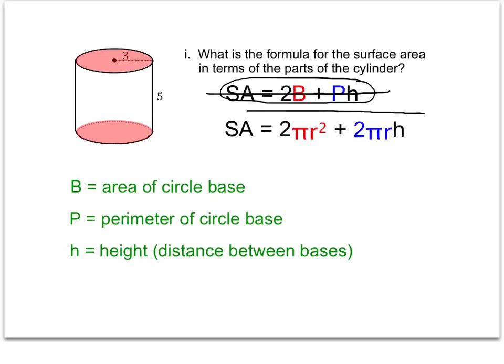So when using the surface area of a cylinder, you'll have pi in the formula because of the circular bases. We took the prism surface area formula and tweaked it to work for circular bases. The formula for the surface area of a cylinder is 2πr² + 2πrh. The only values needed are the radius and the height of the cylinder.